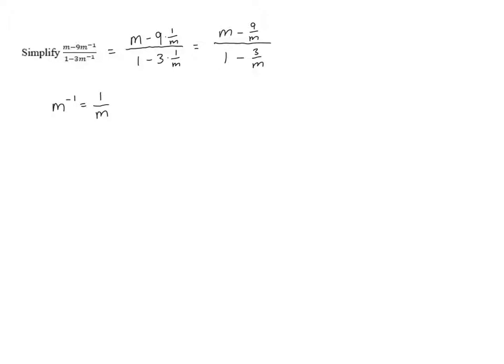And now we're going to use the LCD method that we used before. We need to find the least common denominator of the smaller fractions and multiply the top and bottom of the main fraction by that. In this case, the LCD is just m because the only denominators in the smaller fractions were m. So what we need to do is we need to multiply the top and bottom of this expression by m.